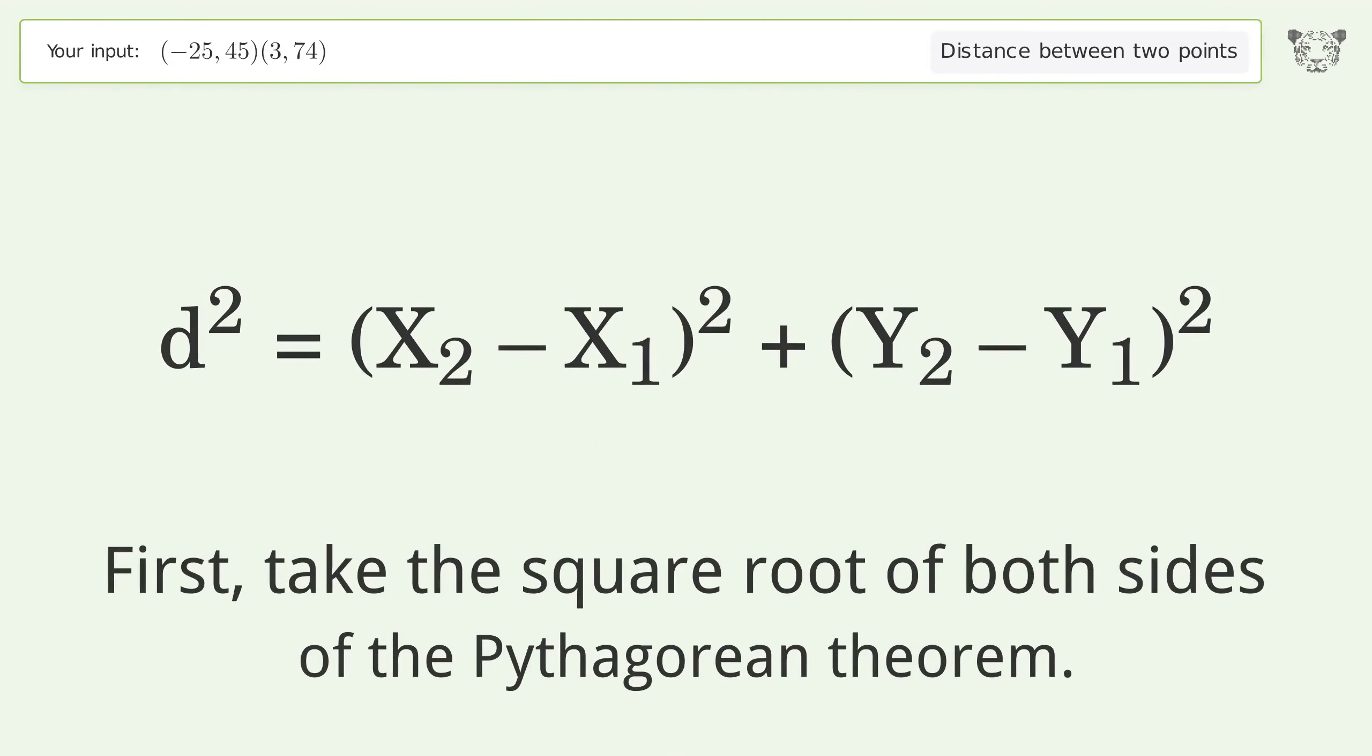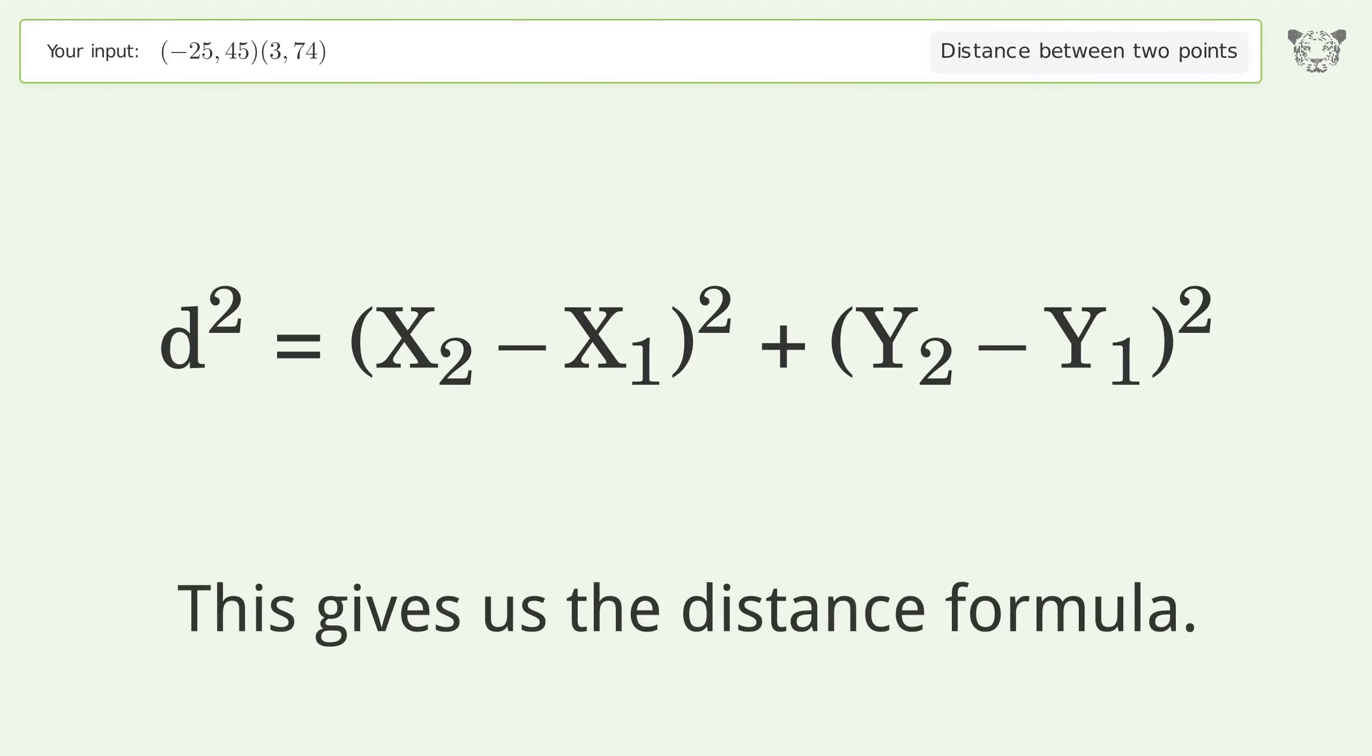First, take the square root of both sides of the Pythagorean theorem. This gives us the distance formula.